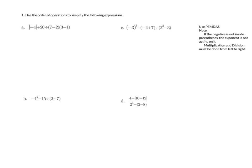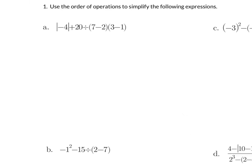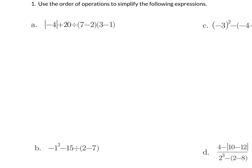Also note multiplication and division must be done from left to right. For example a, we have the absolute value of negative 4, plus 20 divided by 7 minus 2, times 3 minus 1.